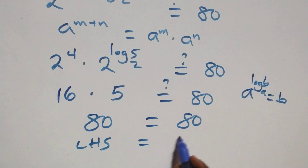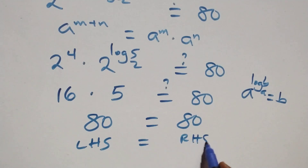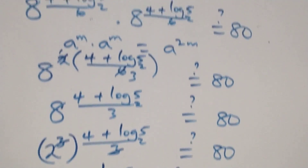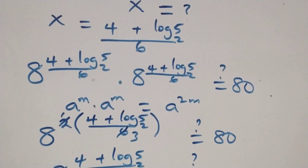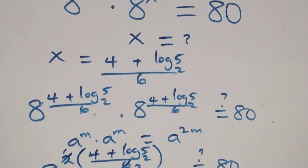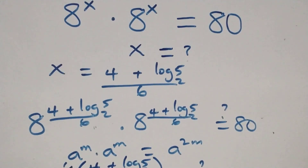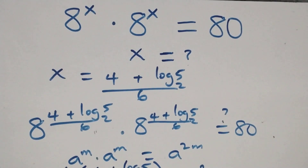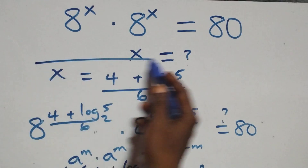And 80 equals 80 from here. So left-hand side equals the right-hand side, and therefore we conclude that x equals (4 plus log base 2 of 5) all over 6 satisfies this given problem.